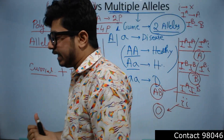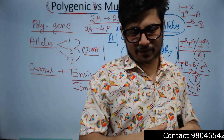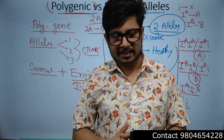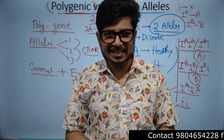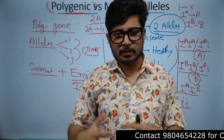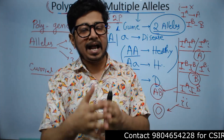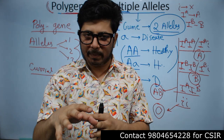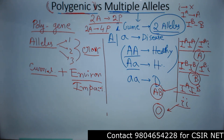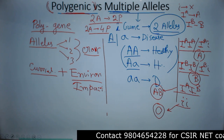Most visible human traits are polygenic inheritance. For example, skin color is polygenic inheritance; eye color is polygenic inheritance; height is polygenic inheritance; and intelligence is polygenic inheritance. Multiple genes are always interacting with each other, and that genetic interaction along with environmental impact together gives us the particular phenotypic expression.